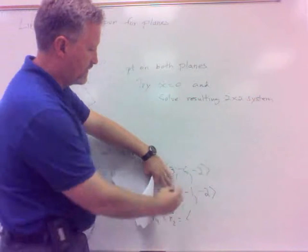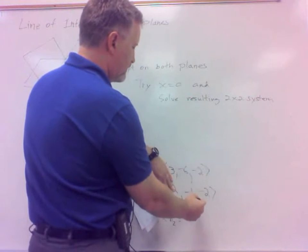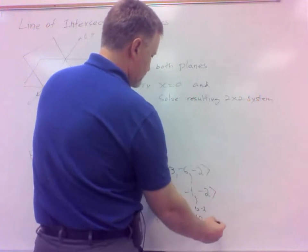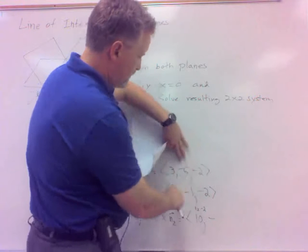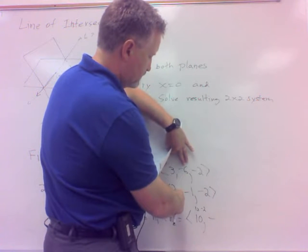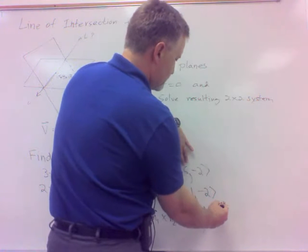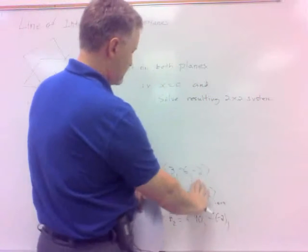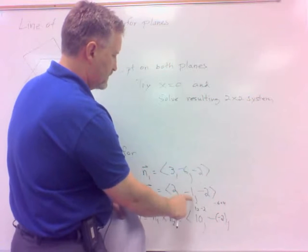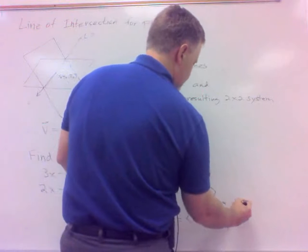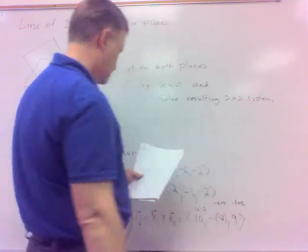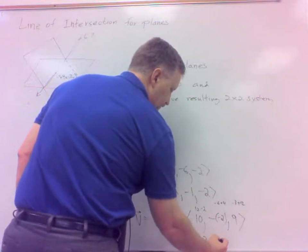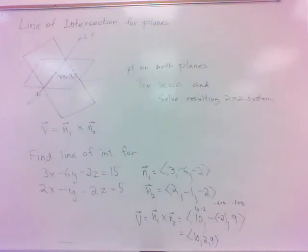So our direction vector for our line is the cross product vector. So that would be, cover that one up, it would be 12 minus 2, that would be 10. This one, minus j, would be cover that one up, so we've got minus 6 plus 4, so that would be minus 2, so it would be minus minus 2, positive 2. And then the k, cover up the k ones, that would be negative 3 plus 12, 9. So 10, 2, 9, and so that's the direction.